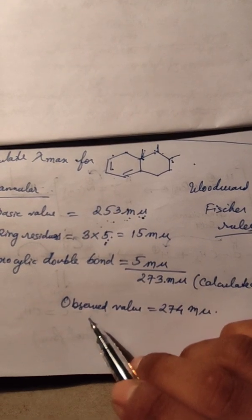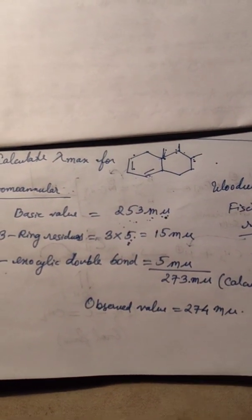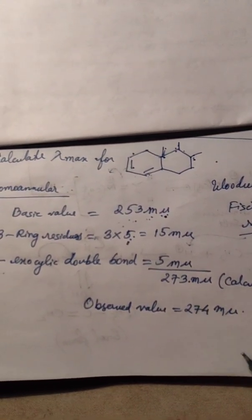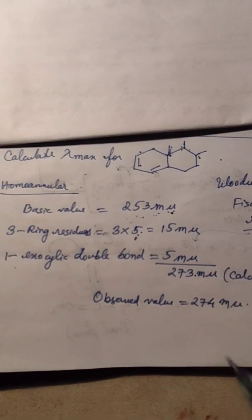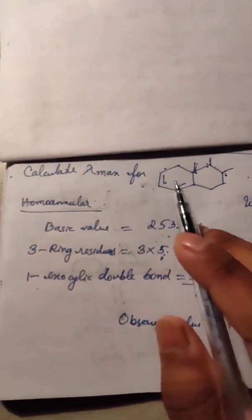Calculating these three contributions, we get 273 millimicrons. This is the calculated value, and the observed value, the theoretical value, is 274 millimicrons. These two values are matching, so like this we can calculate the lambda max of any compound.